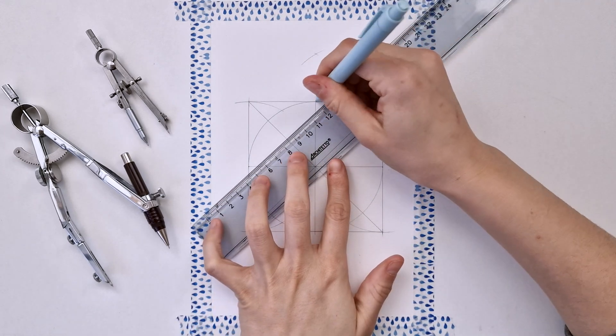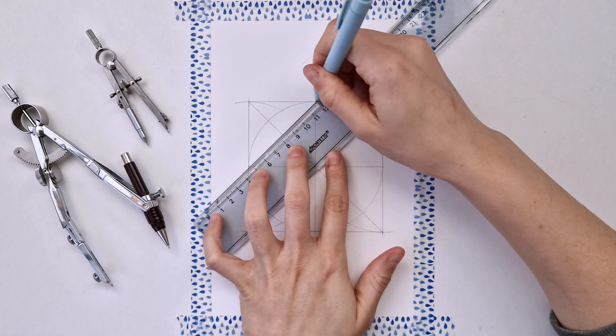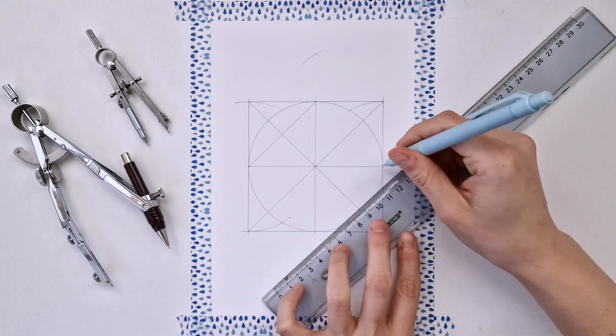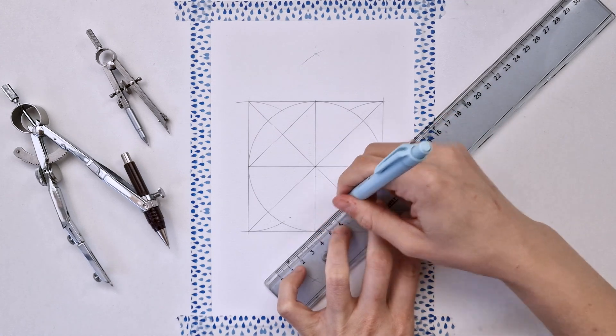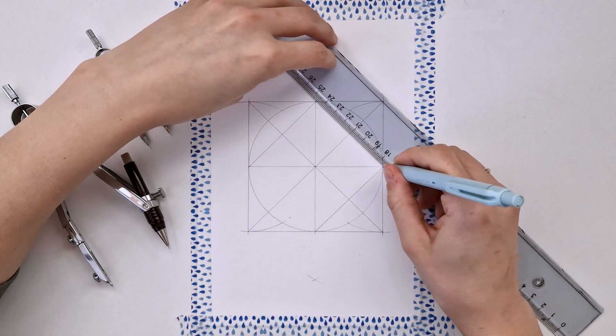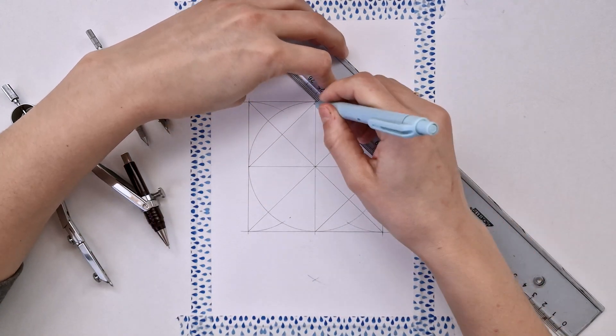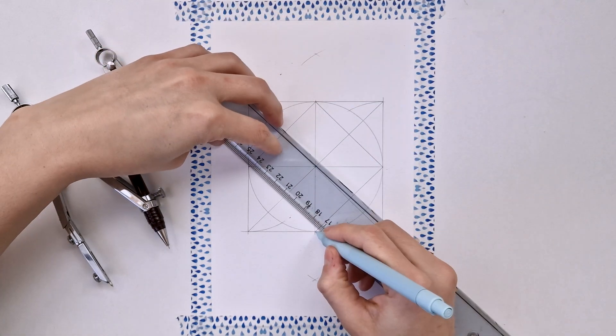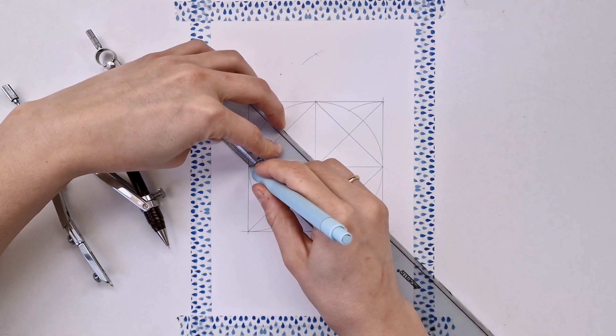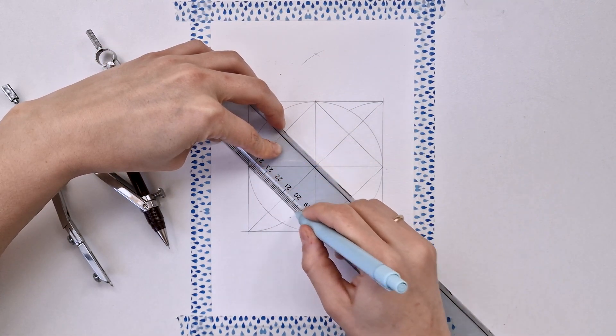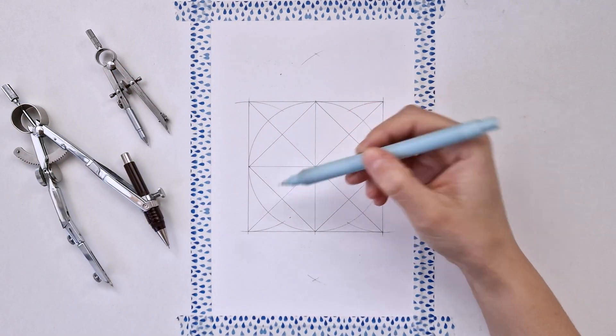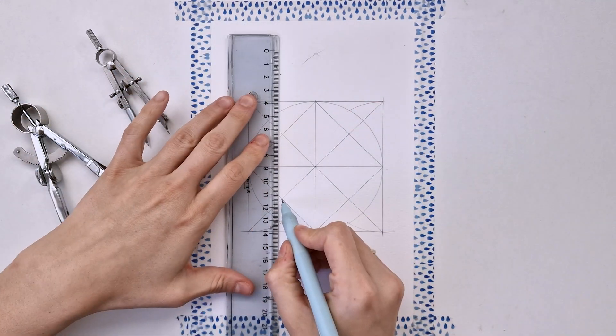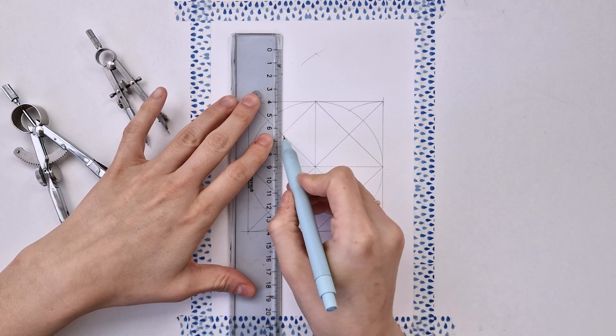So now let's divide each of these four mini squares into other four squares. The first thing we're gonna do is add the diagonals. If you can see, we already have one diagonal inside each of these four squares, so we're gonna add the second one.